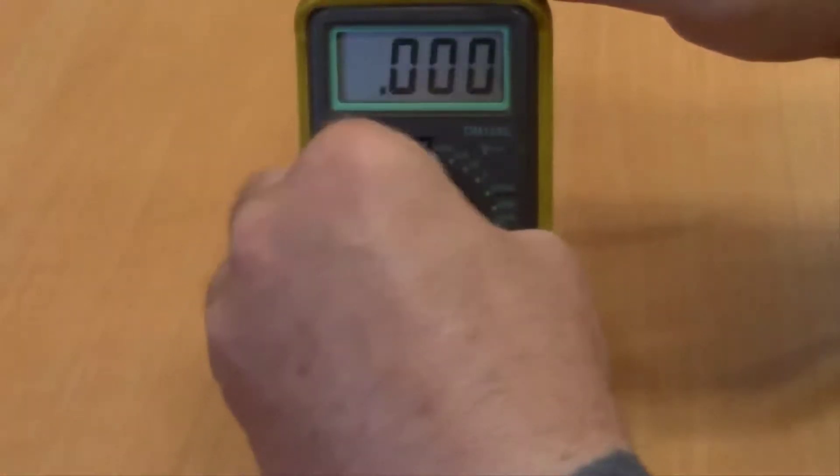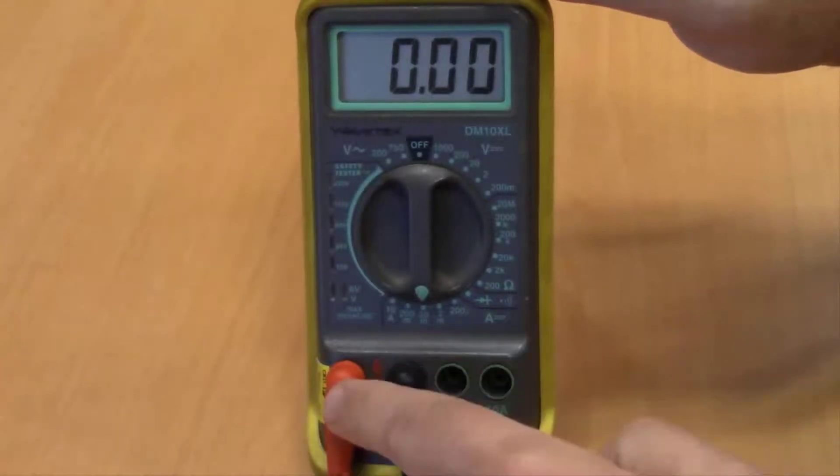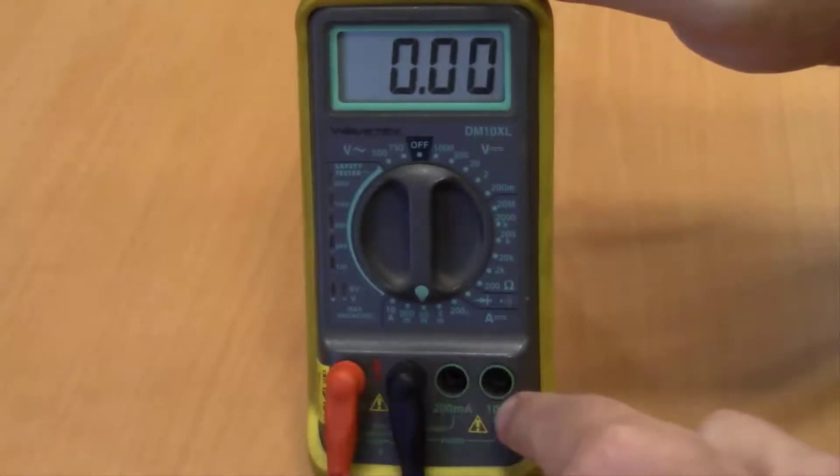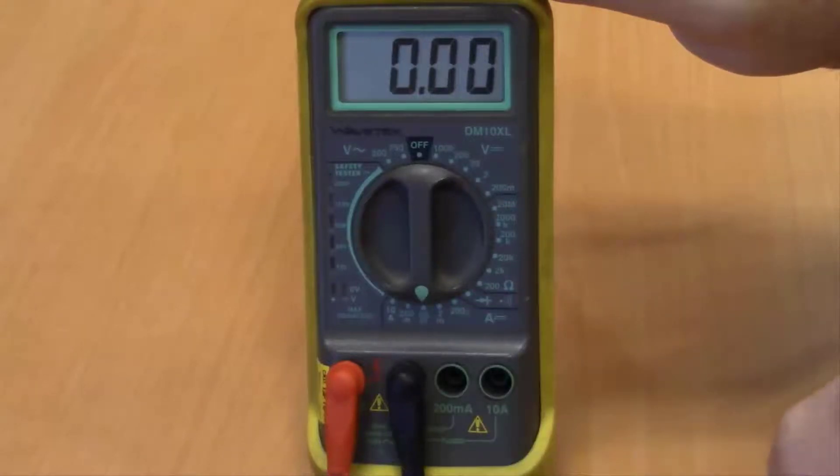Your current or amperage settings are all down here along the bottom. Again you would change your red lead to the appropriate jack depending on where you have it set and what application you're using.